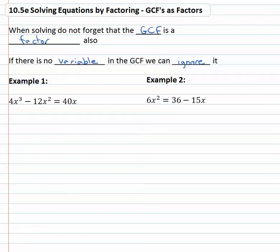So in this first example, we have 4x³ - 12x² = 40x. First we know the equation has to equal zero and we want the highest exponent to be positive. It already is, so let's subtract 40x from both sides.